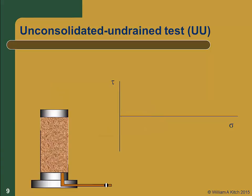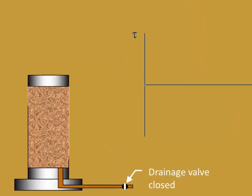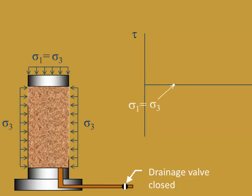The UU test is another total stress test. Like the unconfined compression test, we do not measure pore pressures and do not compute effective stresses. The purpose of the UU test is to determine the undrained shear strength SU. The drainage valve is closed throughout. Initially there is no stress on the specimen and the Mohr circle appears as a point at the origin of the Mohr-Coulomb diagram. As we apply the cell pressure during the consolidation phase, the Mohr circle remains a point because sigma1 and sigma3 are both equal to the cell pressure, but the Mohr circle moves to the right along the sigma axis as the cell pressure increases.